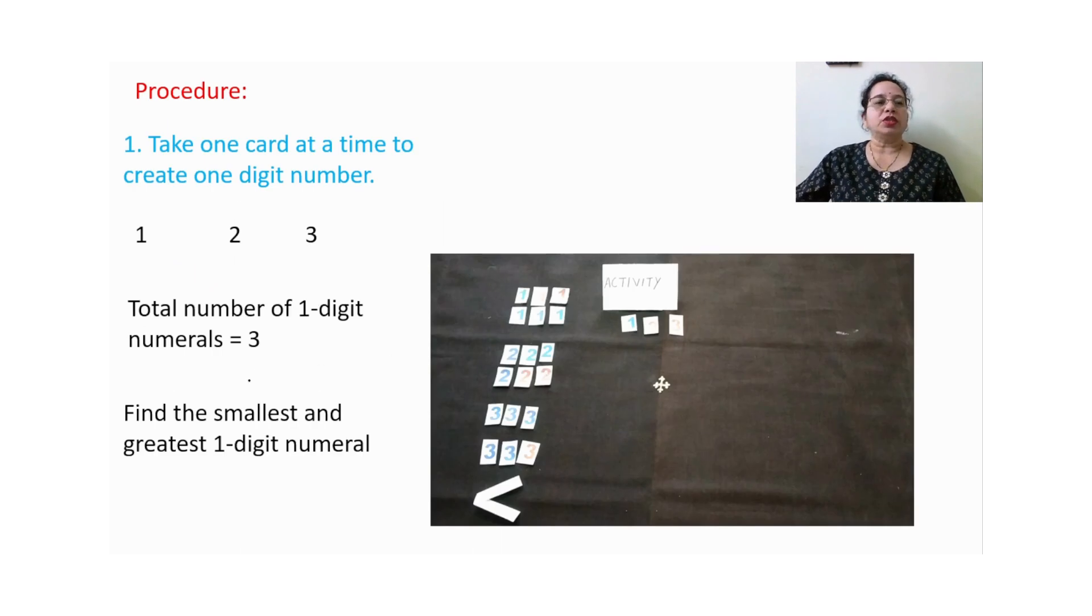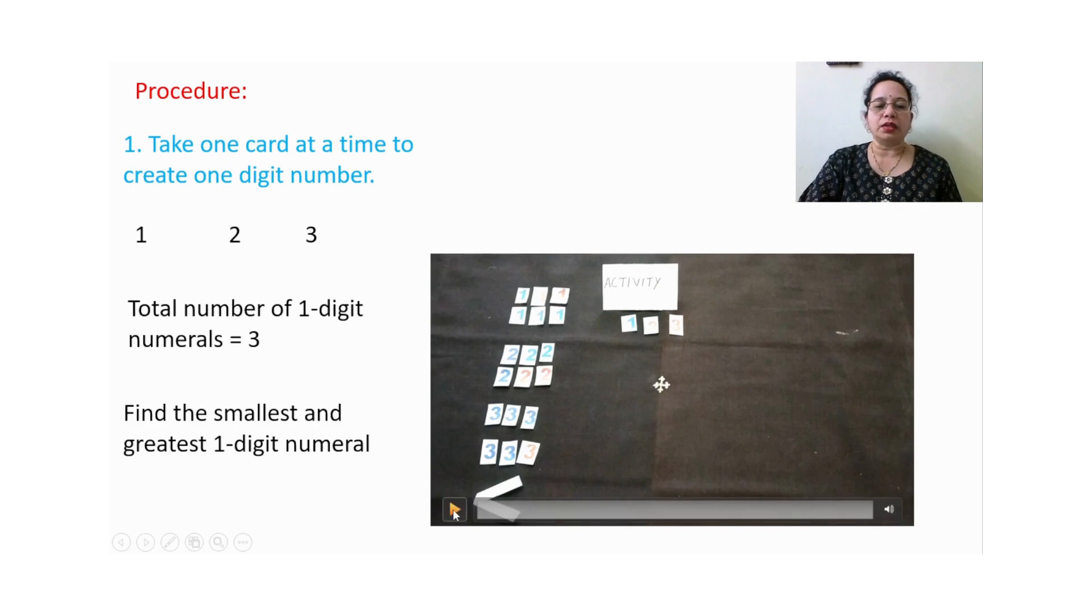So what is the procedure? Here we need to take one card at a time. So I have chosen one, second step I have chosen two, then I have chosen the third number. So total number of one digit numeral will be three and we need to find out which one is the smallest and greatest one digit number. So let us do the activity using number cards.